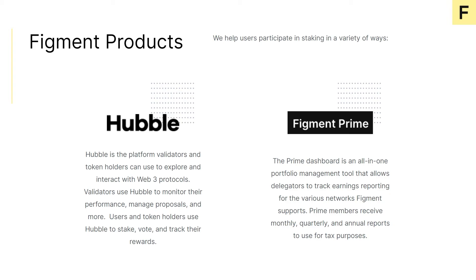At Figment, we offer a couple of different services to help users participate in staking. Hubble from Figment is a next-generation Web3 explorer, allowing token holders the ability to stake tokens, manage governance proposals, monitor validator performance, and more — a powerful tool in the Web3 world. Along with Hubble, we offer Figment Prime for VC funds, exchanges, custodians, hedge funds, fiduciaries, and more — a service to support large token holders and institutions.